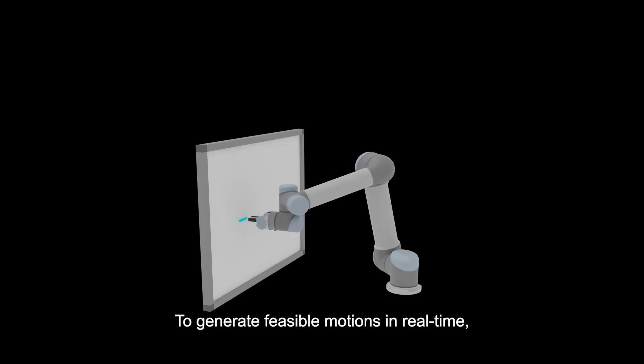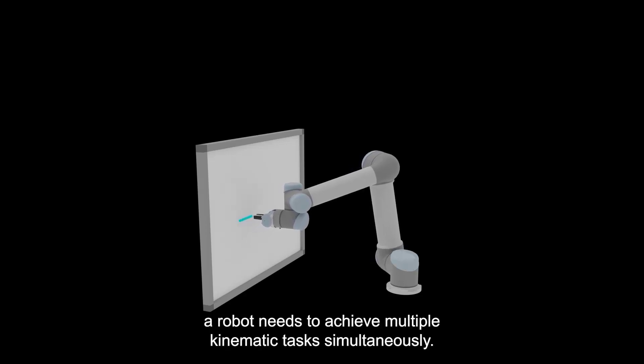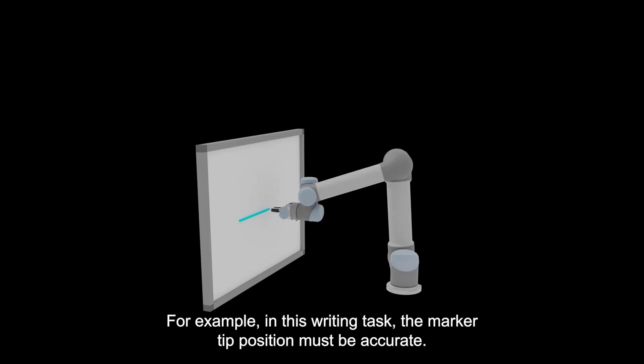To generate feasible motions in real time, a robot needs to achieve multiple kinematic tasks simultaneously. For example, in this writing task, the marker tip position must be accurate.